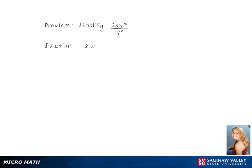For this problem, the goal is to simplify 2xy to the 5th over y squared. We start by leaving 2 and x out front and multiplying it by y to the 5 minus 2, using the formula below. This gives us 2xy to the 3rd, and this is our final answer.